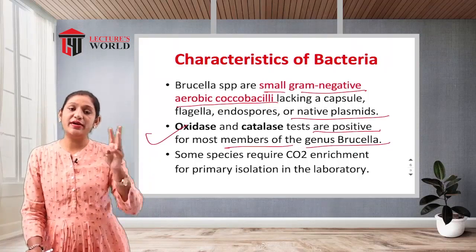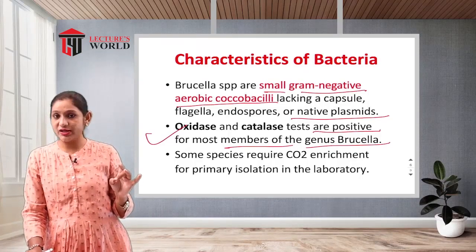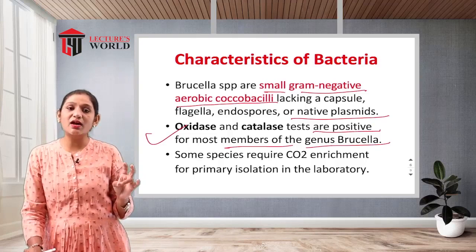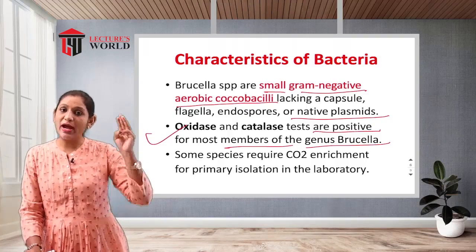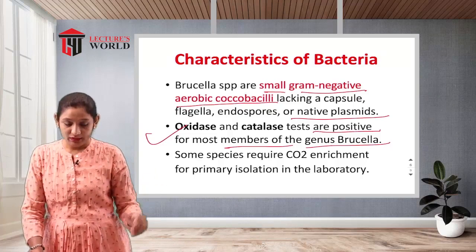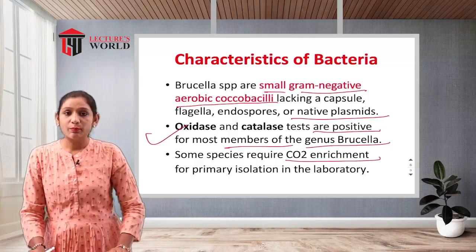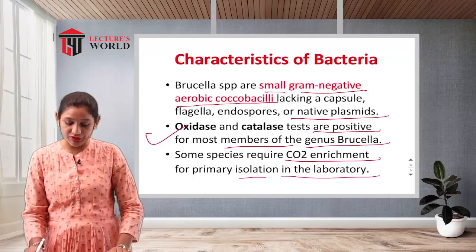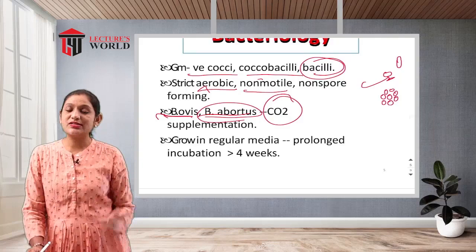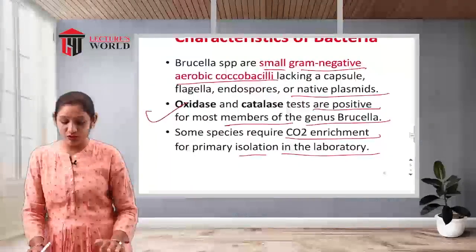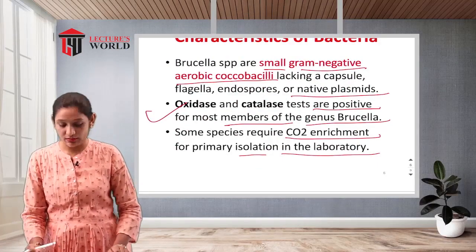Three methods are used to identify any bacteria: first, staining patterns; second, cultural methods (isolation of the culture); and third, biochemical tests. These three are the confirmation tests for bacterial identification. Some species of Brucella require CO2 enrichment for primary isolation in the laboratory.